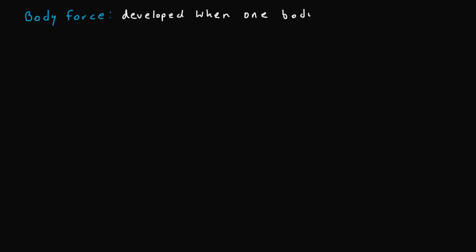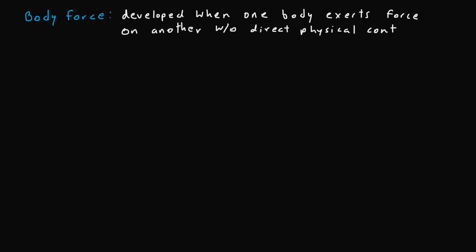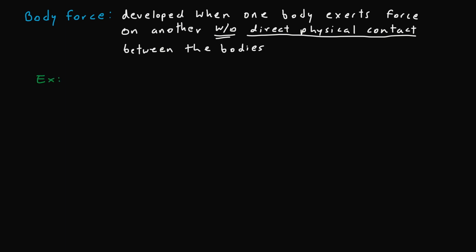Now taking a look at a body force. A body force is developed when one body exerts a force on another without direct physical contact — the key phrase being without direct physical contact. An example of this is Earth's gravitation, where there is no actual physical contact between Earth's gravity and the objects around it, but its gravitation still affects all particles.